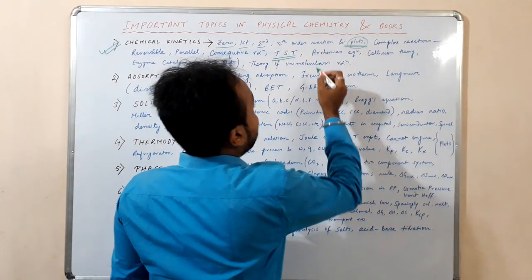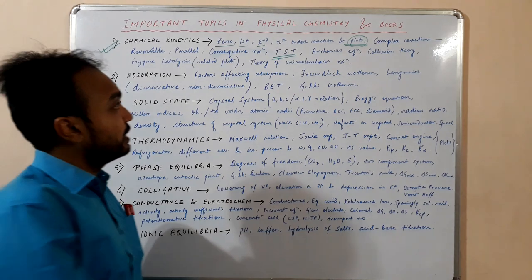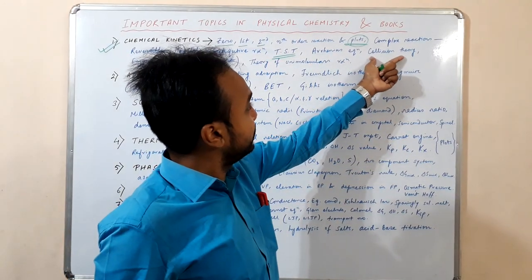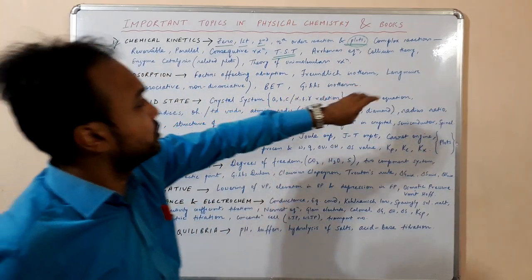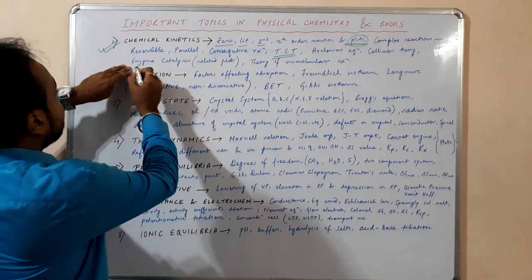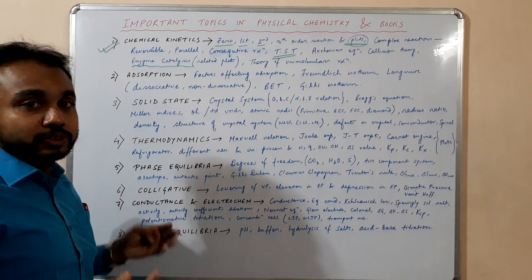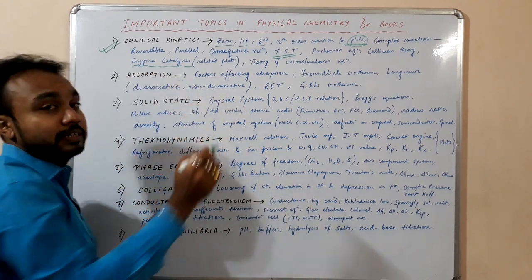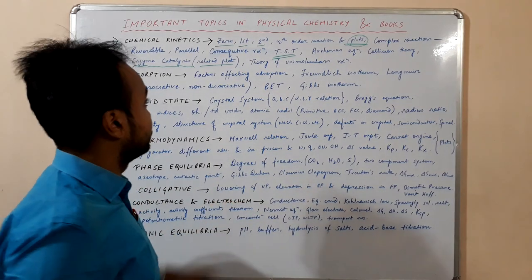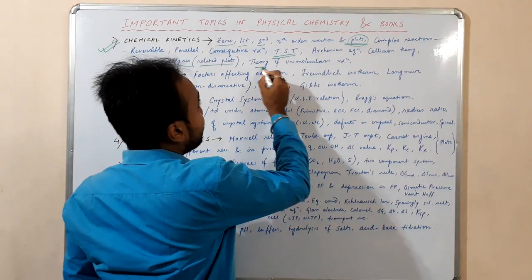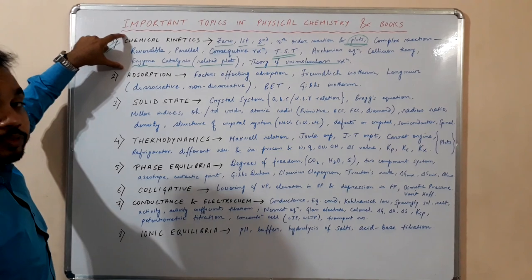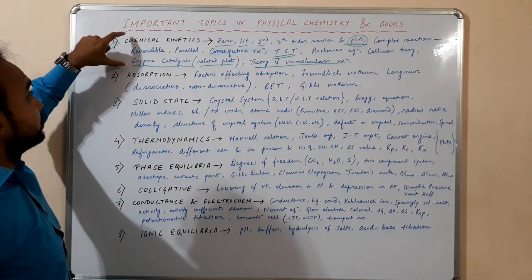Then comes the temperature dependence of reaction rate, that is the Arrhenius equation. Then we need to study the collision theory, which is not so important but a little bit important. Every alternate NET question comes from enzyme catalysis and catalysis, and the related plots like Lineweaver-Burk plot and Eadie-Hofstee plot. Then the theory of unimolecular reaction, also known as the Lindemann equation. These are the things you have to study from chemical kinetics.